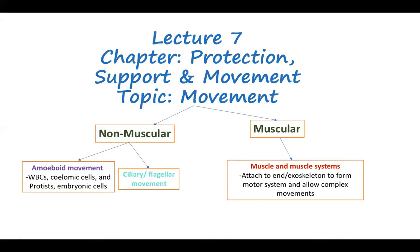The movement of animals can be either non-muscular or muscular. Non-muscular movement occurs majorly in invertebrates, where there are protozoans and some larger animals. In non-muscular movements, these are basically cellular movements or very small thin hair-like structures like cilia and flagella.